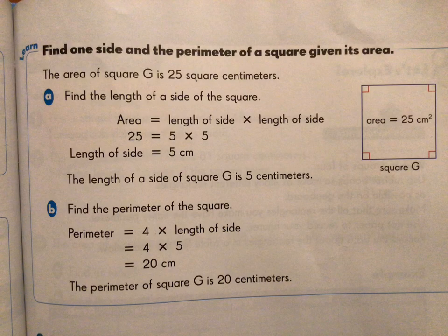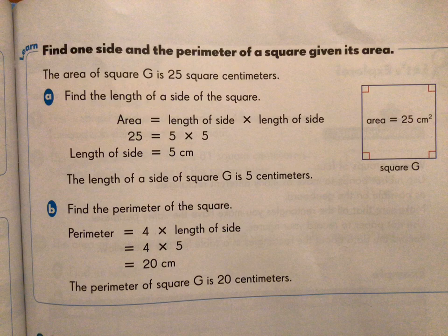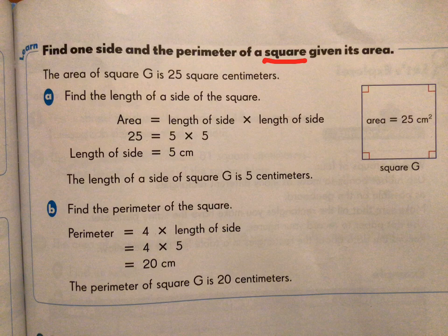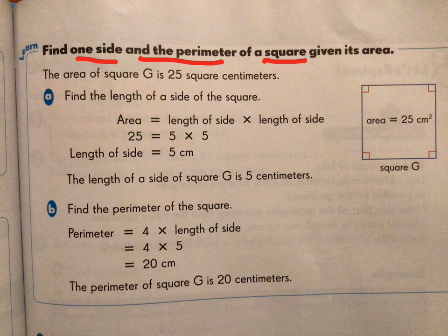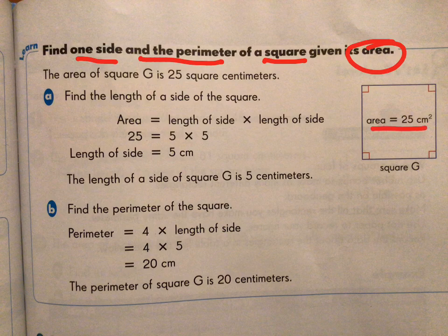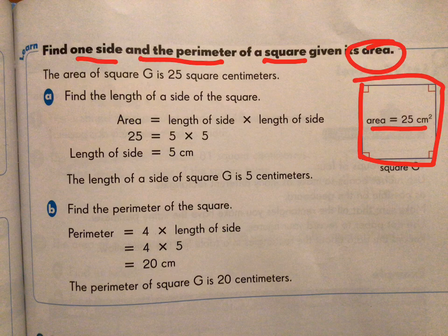Now let's look at a similar problem type, but this time we're dealing with a square. So we are asked to find the side length and the perimeter when we are given the area. You can see in this problem, we're given the area of this square. The area is 25 centimeters squared.